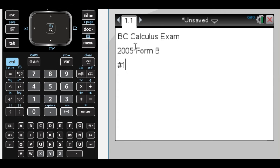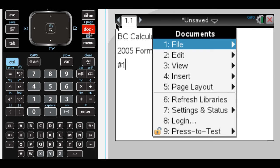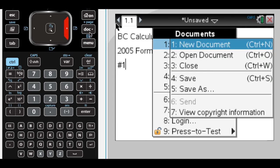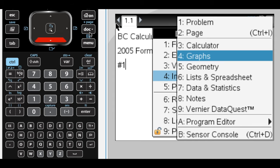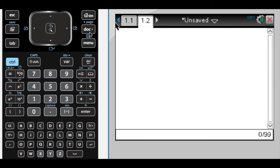All right, this is number one from the 2005 Form B BC Calculus exam, and it is a vector slash parametric equations type of problem. So what I'm going to do is insert a calculator page and get going.